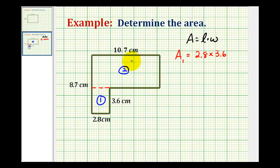But notice if we look at the large rectangle, we're missing the length of this side here. But we can use the fact that the length of this side here is 8.7 centimeters and the length of this side here is 3.6 centimeters. The length of the missing side plus 3.6 must equal 8.7 centimeters, which means we can determine the length of this side here by taking 8.7 centimeters and subtracting 3.6 centimeters.